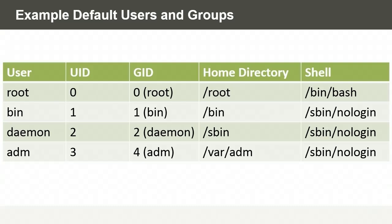The root group ID is also 0. The root user account has a home directory in /root, and the default shell is normally set to bash. If we look at another account, for example the daemon account, which is used to run some background daemons or services, it might have a user ID of 2, be a member of a group of the same name, have a home directory in /sbin, and a shell entry such as /sbin/nologin, because this is not an account that can be logged into interactively. Instead, it would just be used to launch a background daemon.